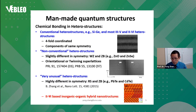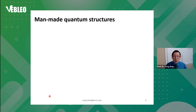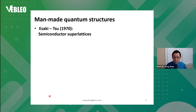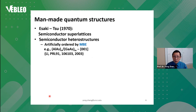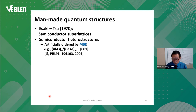Today I'm going to talk about another example, which is a 2-6 base hybrid where inorganic is interconnected with an organic molecule. A brief history: it started in 1970, proposed by Isaki and Su, who proposed making semiconductor superlattices. One nice technique people consider is molecular beam epitaxy, which gives you an artificial way to make ordered structures.